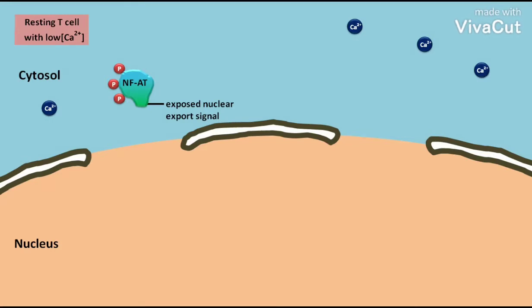When T-cell is activated by foreign antigen, the intracellular calcium ion concentration increases. In the high calcium ion concentration, a protein phosphatase called calcineurin binds to the phosphorylated NFAT and dephosphorylates it.